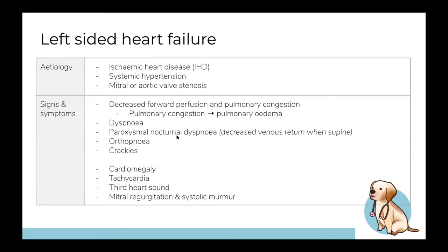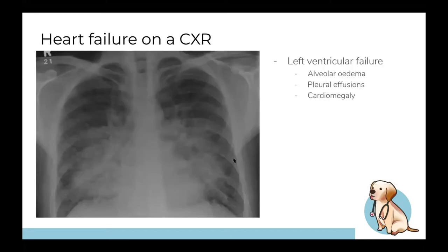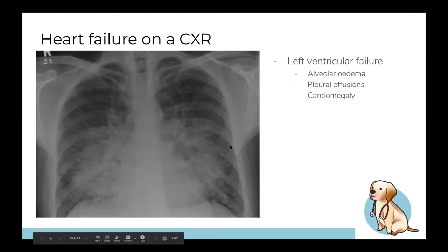Left-sided heart failure leads to pulmonary edema, dyspnea, and paroxysmal nocturnal dyspnea. Right-sided heart failure mainly leads to peripheral edema, ascites, and JVP distension. On the chest X-ray showing left ventricular heart failure, notable findings include edema or fluid — it's definitely not a clear chest X-ray — and the heart is also quite enlarged.